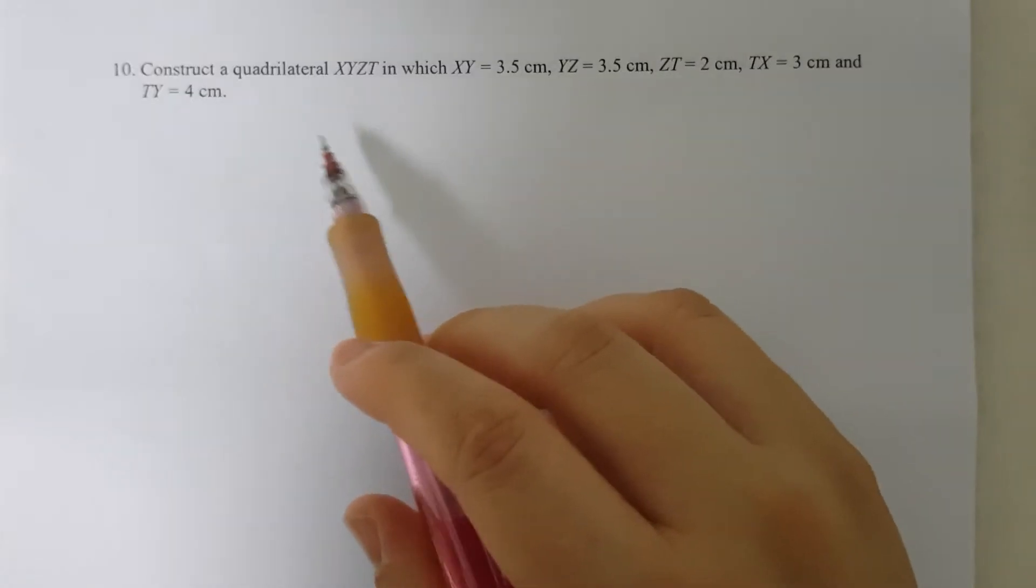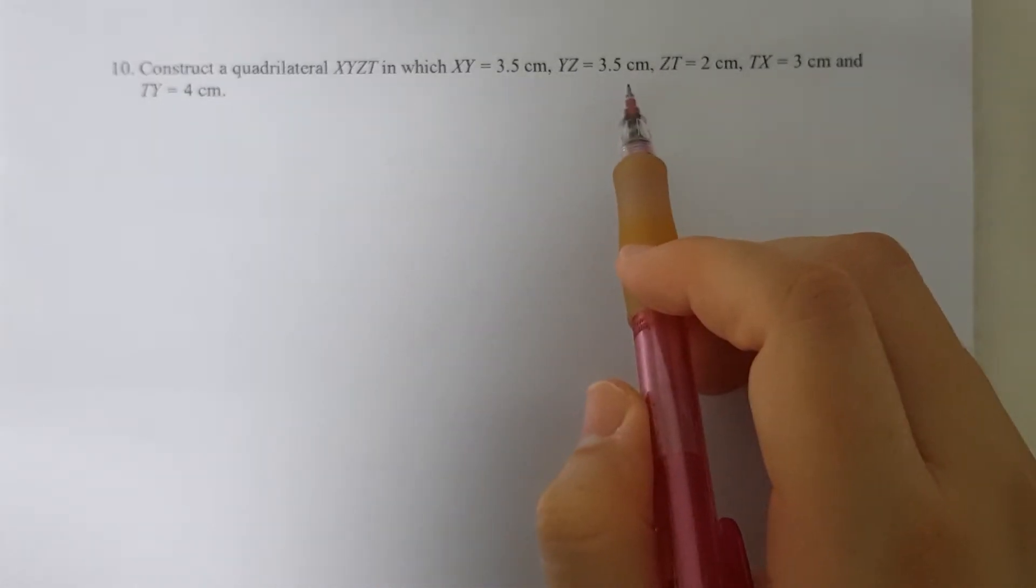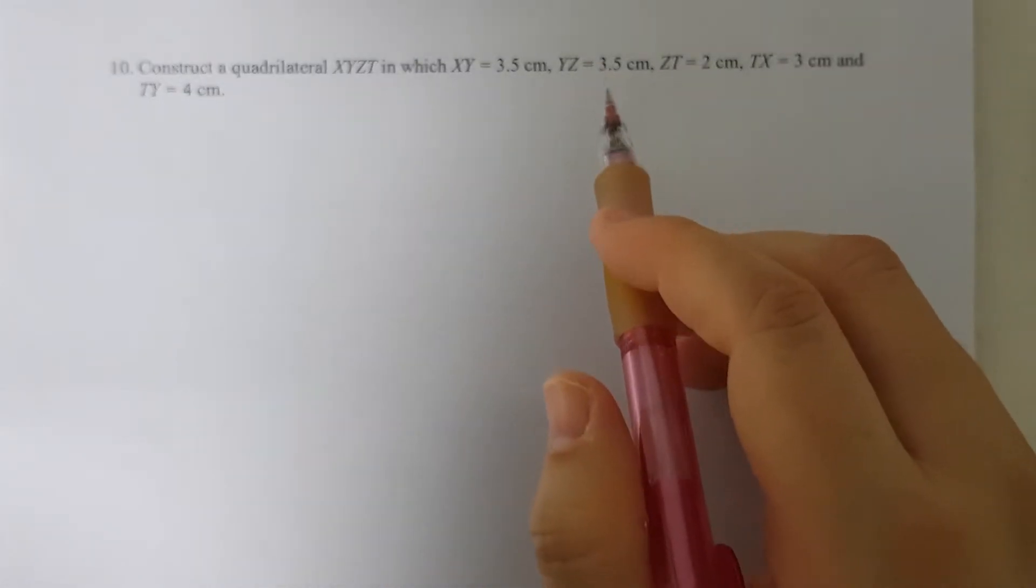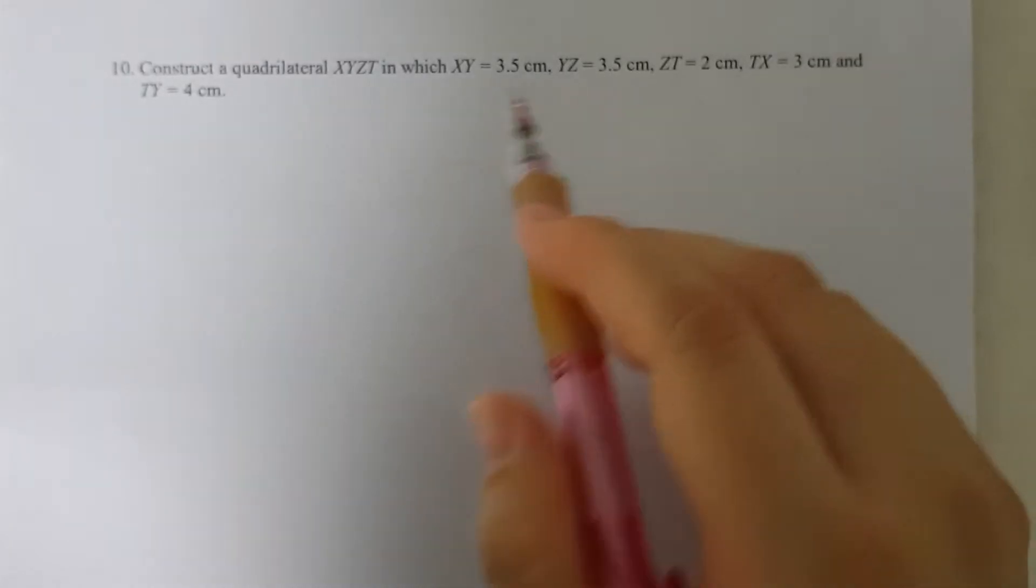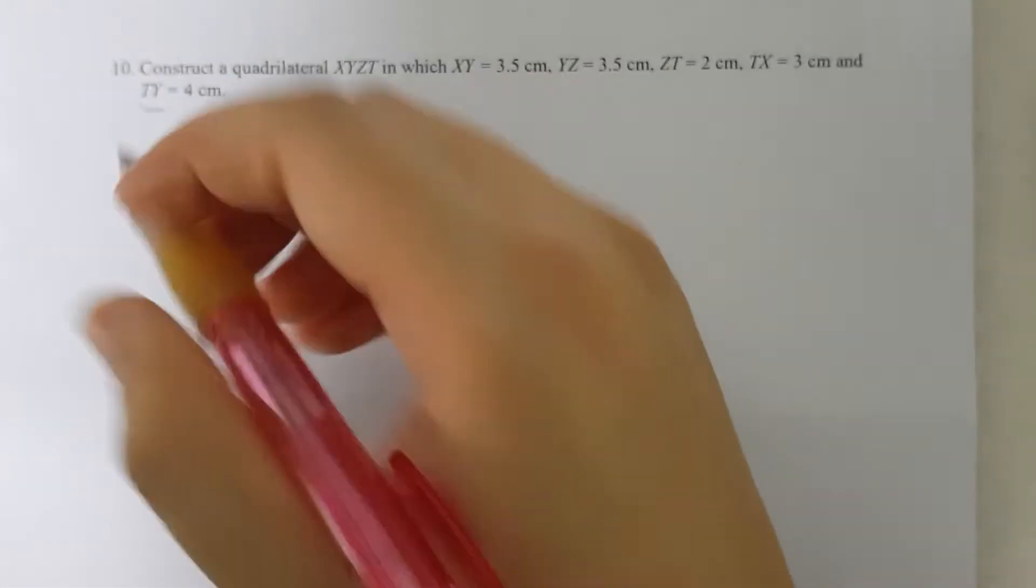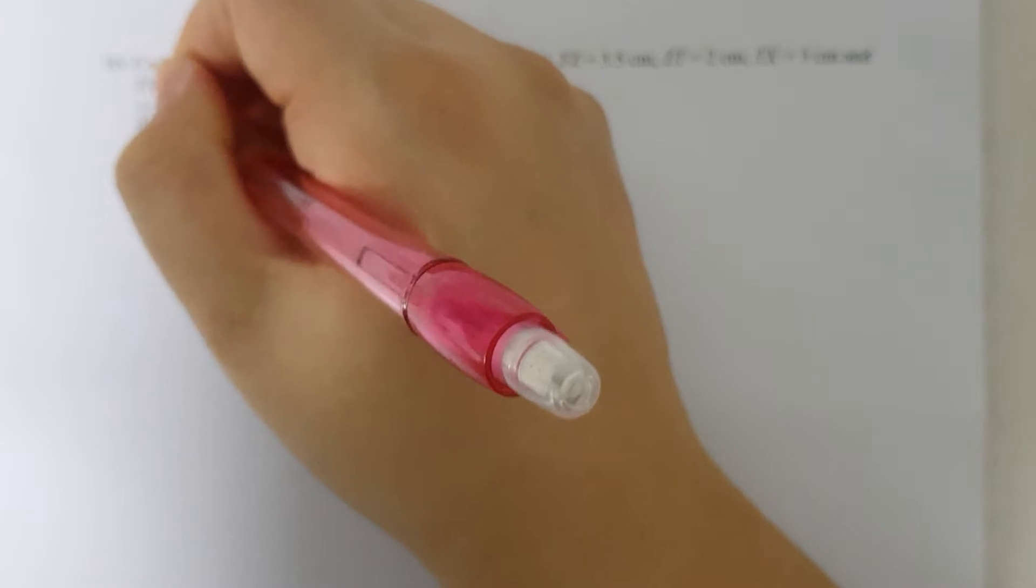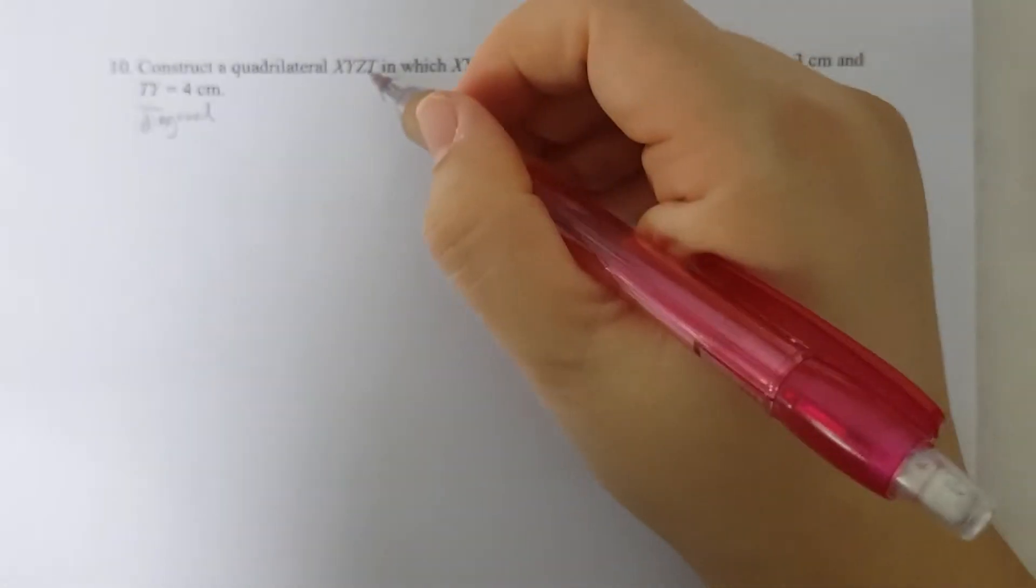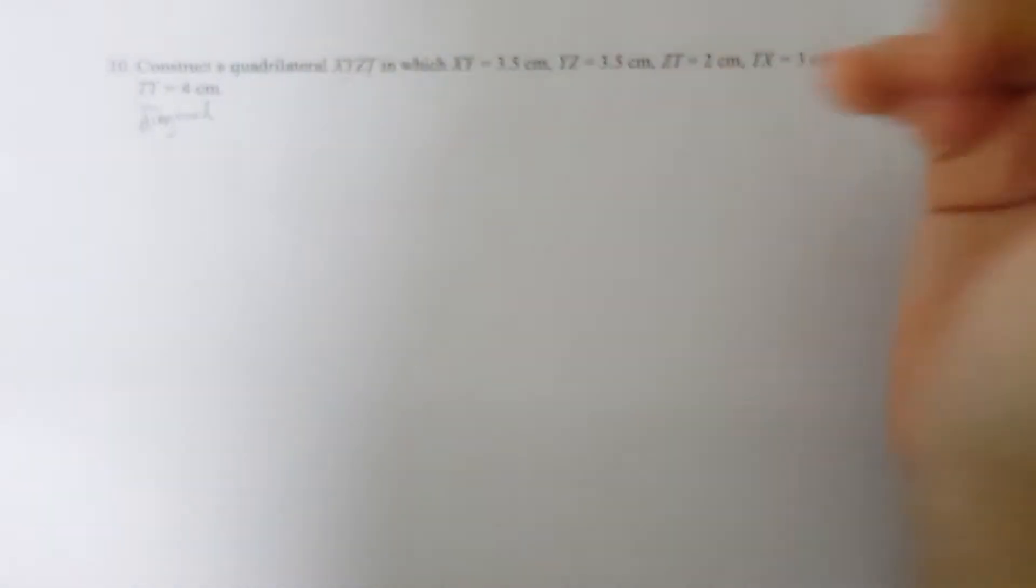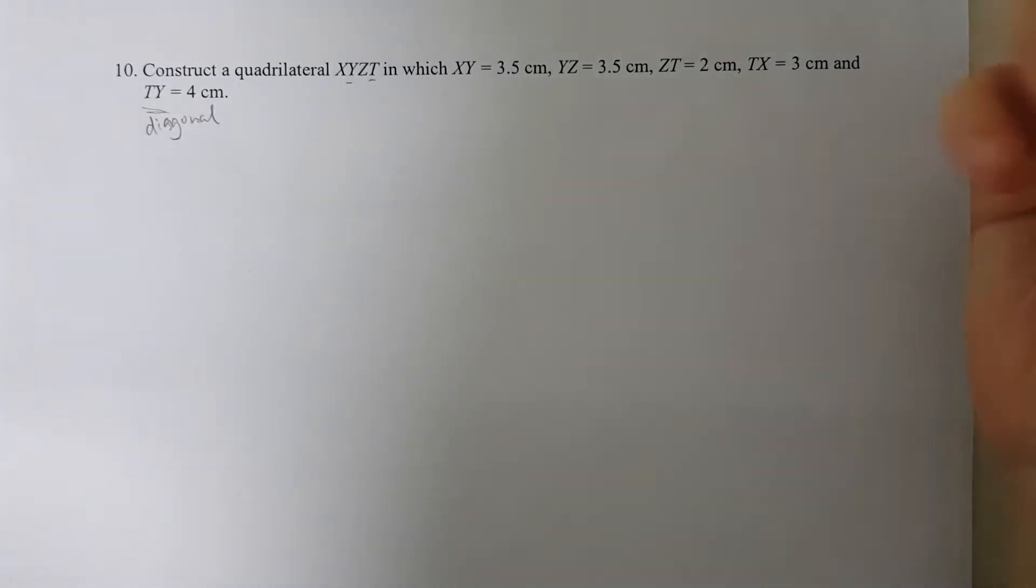All the lengths are given. We are even given one of the diagonals, which is TY. This is a diagonal. I know it's a diagonal because TY is here.